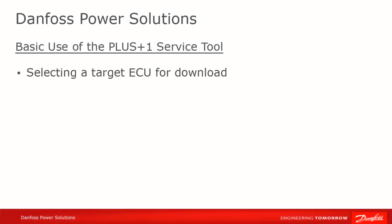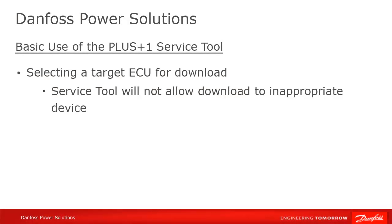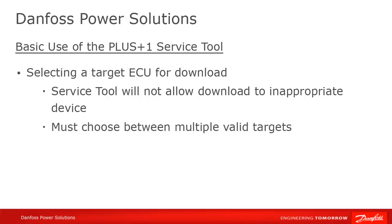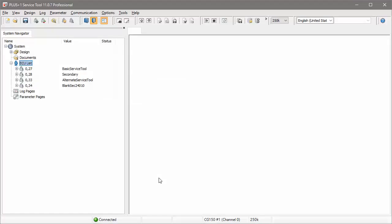The service tool is smart enough to prevent you from downloading an inappropriate application to a device. For instance, you wouldn't be able to download an MC18 application to an MC50 controller — even a wrong model number will prevent download. However, if there are multiple valid candidates for download on the CAN bus, you have to choose the destination at download time.